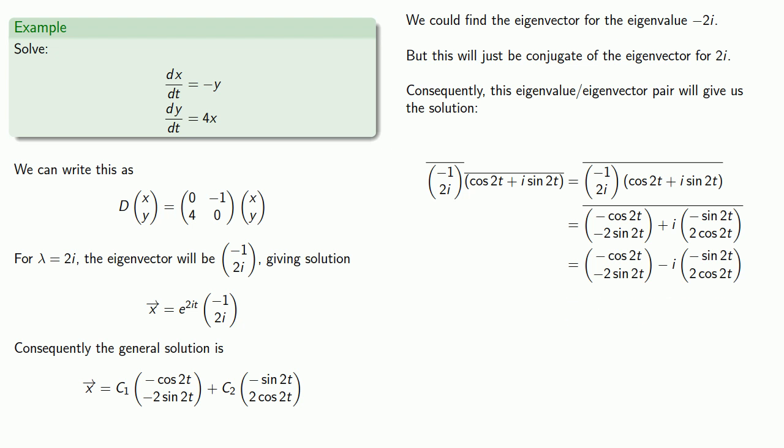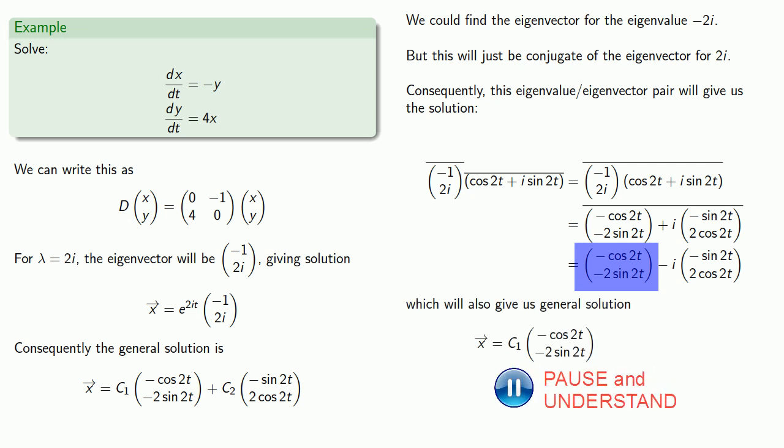And again, the real and complex parts give us solutions. The real part here is the same, and so it'll produce the same type of term in the general solution. And while the complex part looks different, remember that this is going to be multiplied by some arbitrary constant, and we can absorb that minus, and that gives us the same solution for the complex part.